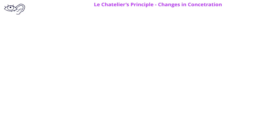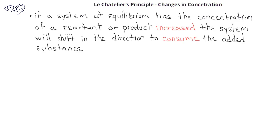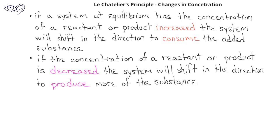Let's look at how Le Chatelier's principle applies when we change the concentration of a reactant or product. If a system is at equilibrium and the concentration of a reactant or product is increased, the reaction will shift to consume the added substance. However, if the concentration of a reactant or product is decreased, the system will shift in the direction that will produce more of the substance that was removed.